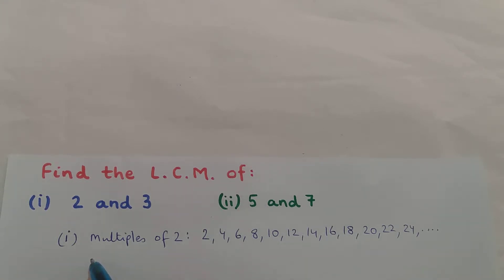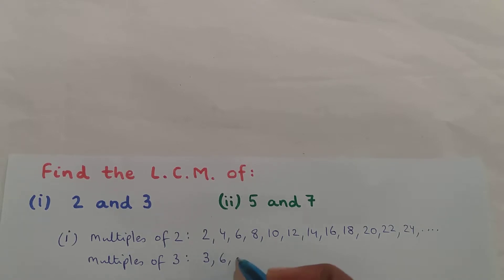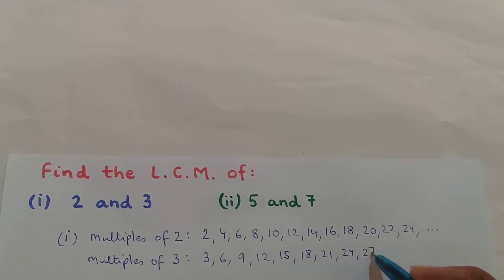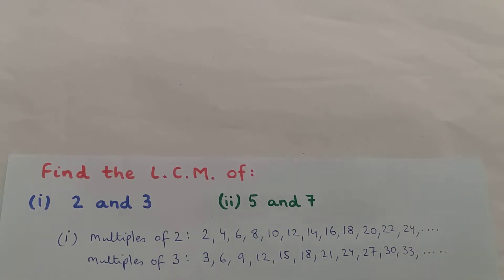Next I will write down the multiples of 3. The multiples of 3 are: 3, 6, 9, 12, 15, 18, 21, 24, 27, 30, 33, and so on. So I have written down a few multiples of 3.